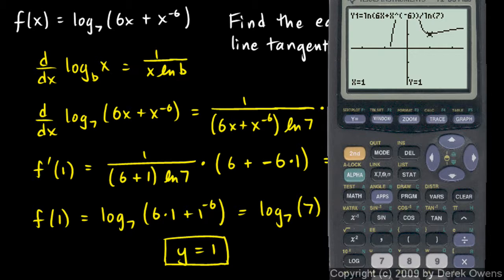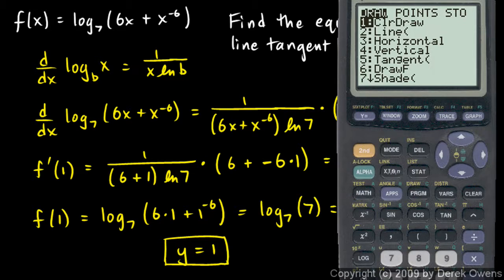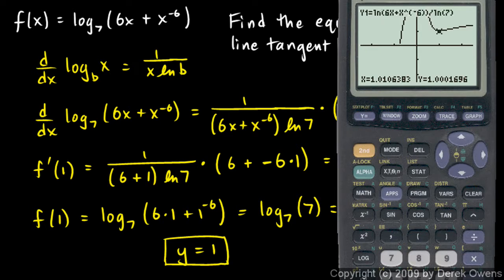And we can make it draw a tangent line. I'm going to hit the draw key, which is the second function here on the program key. I'll hit second draw. And option 5 here is a tangent. And we tell it to draw a tangent at x equals 1. So I type 1 right there and hit enter. And it draws a tangent line, and there it is. Slope of 0.